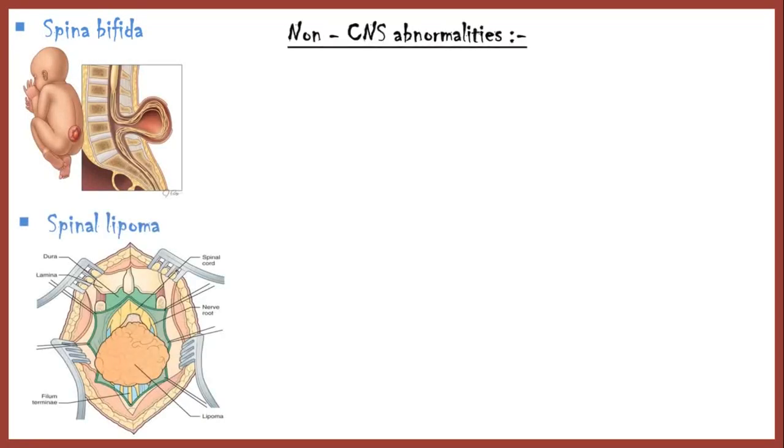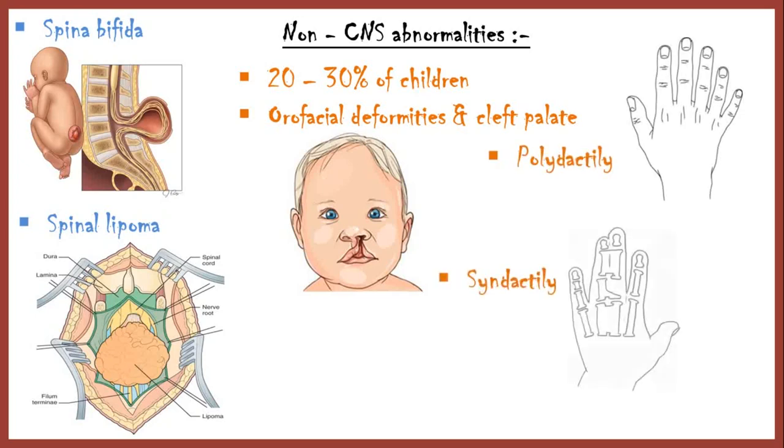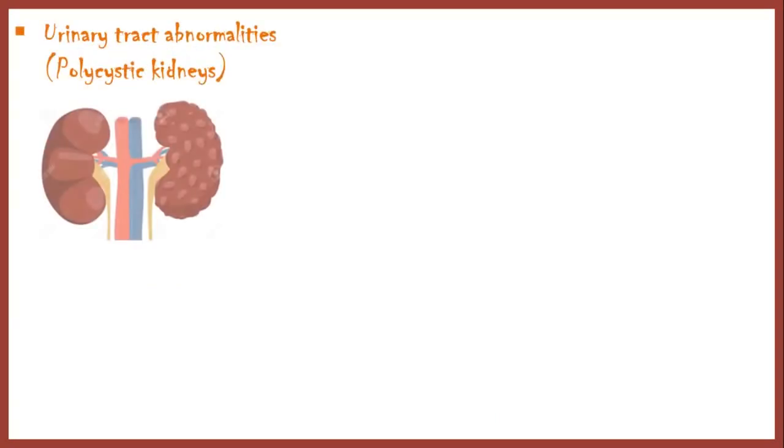About 20-30% of children show non-CNS abnormalities, such as orofacial deformities and cleft palate, polydactyly and syndactyly, cardiac abnormalities, urinary tract abnormalities like polycystic kidneys, cataracts and retinal dysgenesis which leads to vision problems, and hypertelorism.